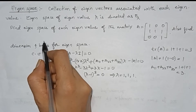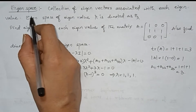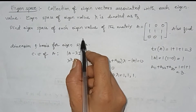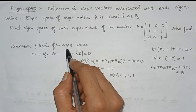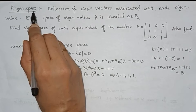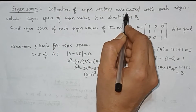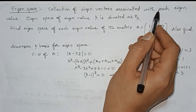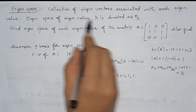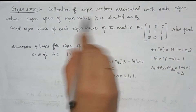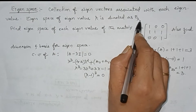In this video, I will explain what is an eigenspace and how to find an eigenspace, dimension, and basis for eigenspace. Eigenspace means it is the collection of eigenvectors associated with each eigenvalue. If the eigenvalue is lambda, then its eigenspace is denoted as E_lambda.